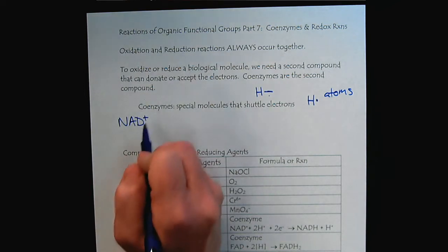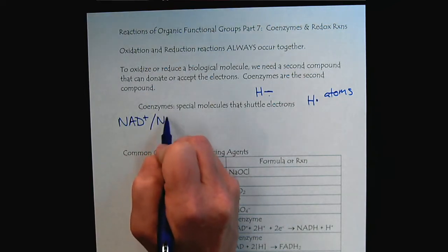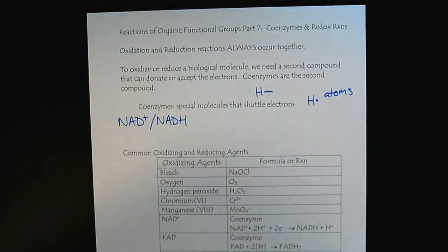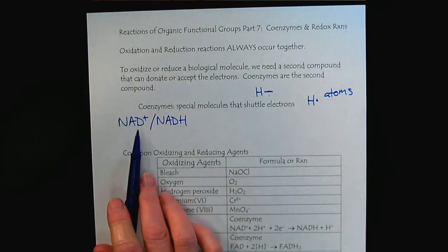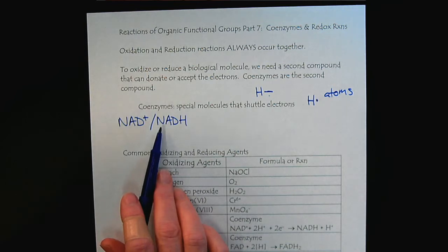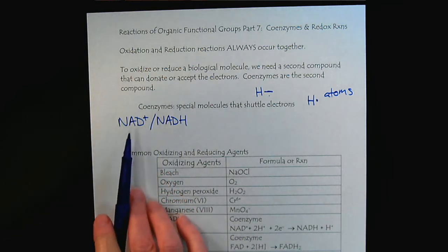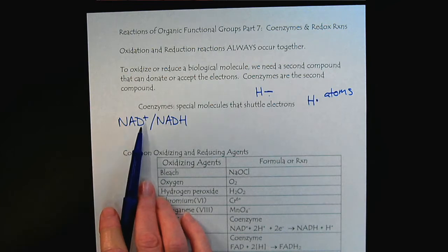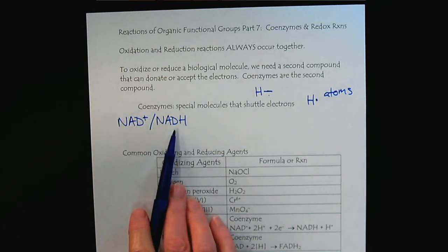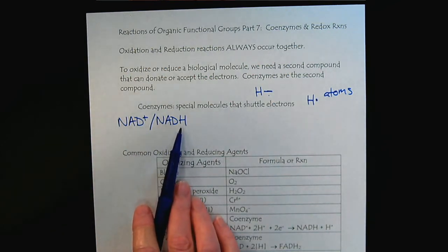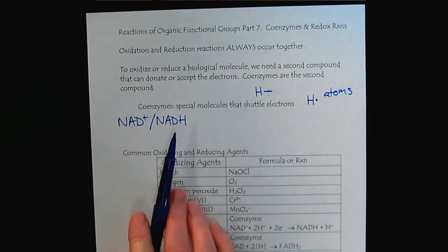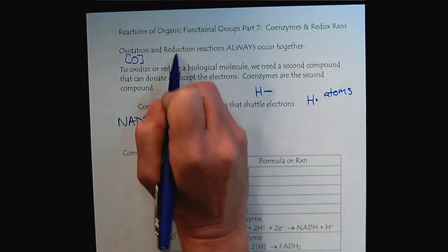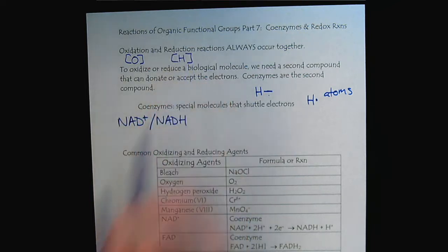There are three primary coenzymes we're going to focus on — there are more, but these are the big three. First, we have NAD+ and NADH. We recognize NAD+ as the oxidized form and NADH as the reduced form because of the presence of the hydrogen. When we think about oxidation, we think of O; when we think of reduction, we think of hydrogen.